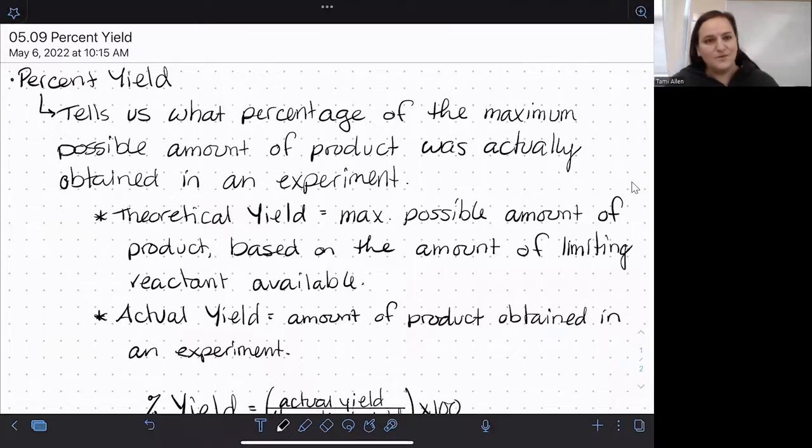In this video, we're going to look at a way that we can assess how a reaction went in the lab. This idea is known as percent yield. Essentially, what the percent yield tells us is what percentage of the maximum possible amount of product was actually obtained in an experiment.